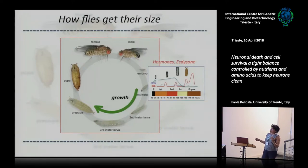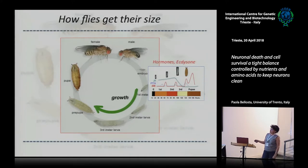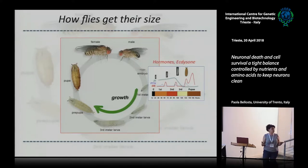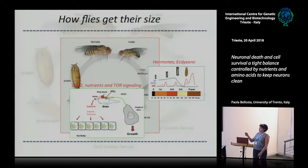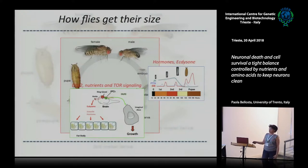Ecdysone is important because it is produced in peaks before molting. Drosophila development is divided into three larval stages, approximately 24 hours each. Metamorphosis happens when there is a huge peak of ecdysone, and then the animal transitions to metamorphosis. It's not so simple, because metamorphosis is also regulated by the fat body, as I'll explain in a moment.